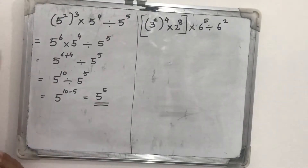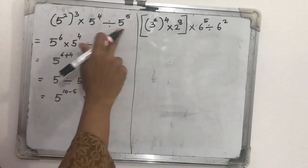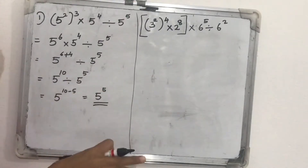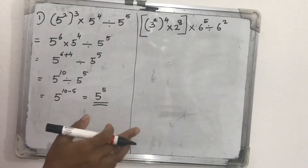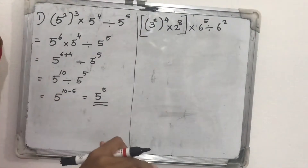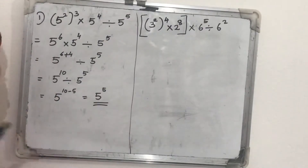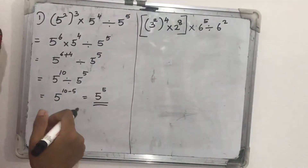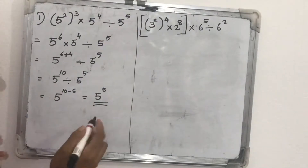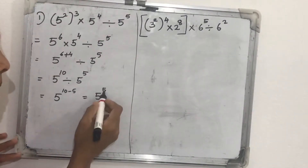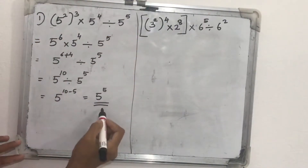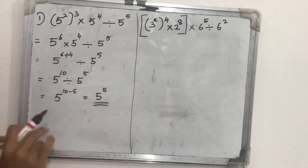If the question asks to find the value, then we find it by multiplying. Five raised to five means five multiplied five times: five squared is twenty-five, twenty-five times twenty-five is six hundred and twenty-five, then multiply one more five. So if the question says 'find the value,' we compute it, but if it says 'simplify,' we stop at five raised to five — the single power form.